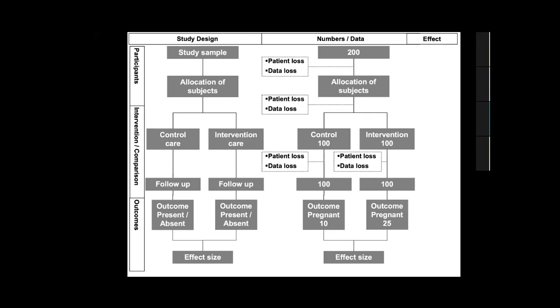In the control group, 10 people had the outcome of interest, which was becoming pregnant, because these 200 people included in the study suffered from infertility. In the intervention group, 25 people became pregnant. From this information, we can calculate the effect size, which I'm going to show you next.